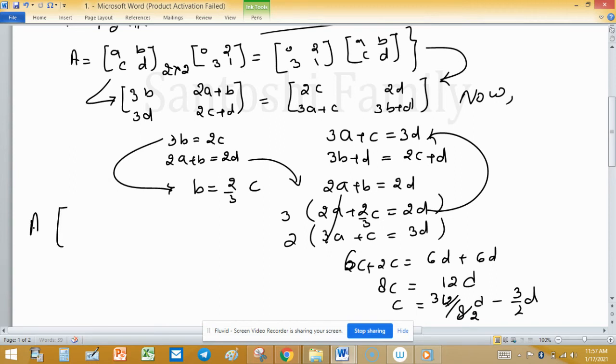It means matrix A can be written as [a, b; c, d] where b = (2/3)c and c = (3/2)d.